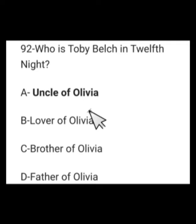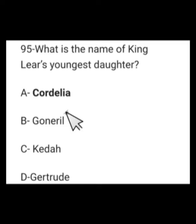Number 30: Who is Toby Belch in Twelfth Night? Options: uncle of Olivia, lover of Olivia, brother of Olivia, or father of Olivia. Toby Belch was the uncle of Olivia in Twelfth Night. Number 31: What is the name of King Lear's youngest daughter? Options: Cordelia, Goneril, Regan, or Gertrude. Her name was Cordelia.